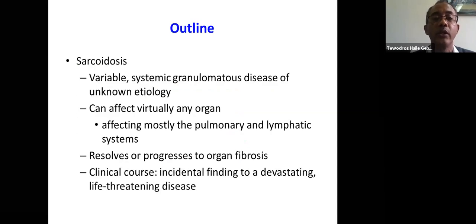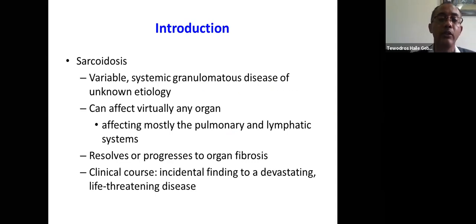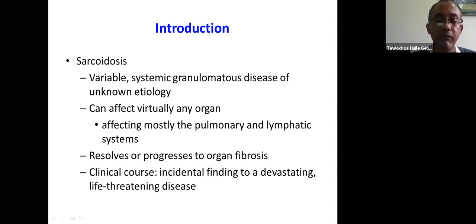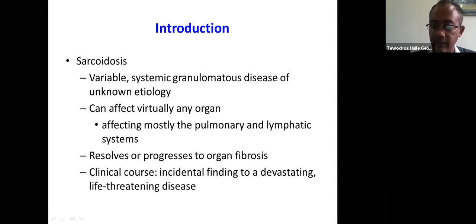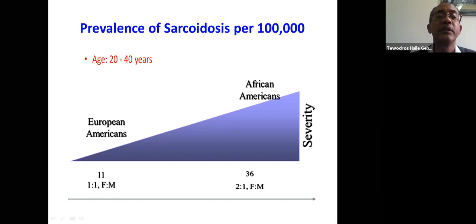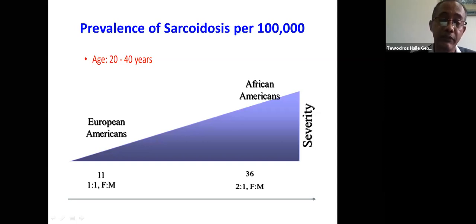This is the outline of my talk. As an introductory remark, sarcoidosis is a variable, multi-systemic granulomatous lymphatic disease of unknown etiology, and it can affect virtually any organ, but mostly affects the pulmonary and lymphatic systems. Its natural course is either it can resolve by itself in around 50% of the patients, or can progress to organ fibrosis and other complications. It can be an incidental finding or end up in a devastating life-threatening condition. When it comes to epidemiology, the usual age of occurrence is between 20 to 40, but the median age in patients from the Scandinavian countries, where this is common, is like 47 to 49.